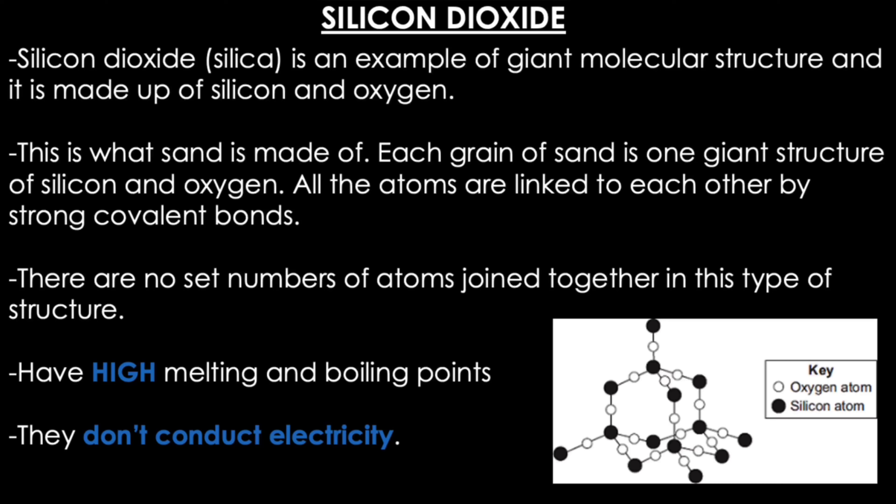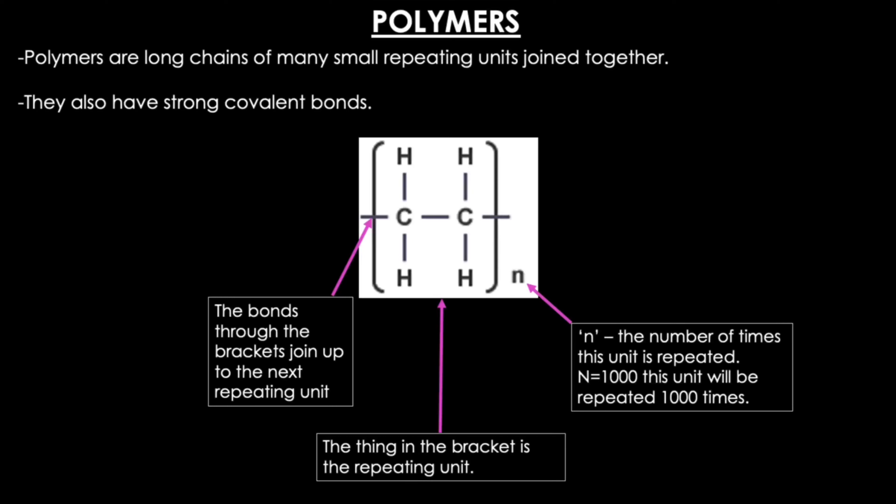Silicon dioxide, also known as silica, is an example of a giant molecular structure made up of silicon and oxygen — this is what sand is made of. Each grain of sand is one giant structure of silicon and oxygen. All atoms are linked to each other by strong covalent bonds, and there are no set numbers of atoms joined together in this type of structure. Silicon dioxide has high melting and boiling points and does not conduct electricity.